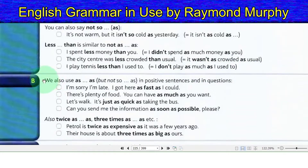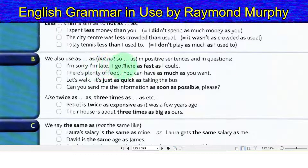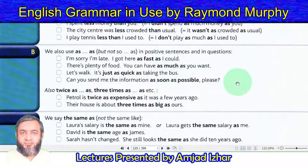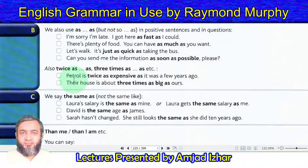We also use 'as...as' (but not 'so...as') in positive sentences and in questions. I'm sorry I'm late — I got here as fast as I could. There is plenty of food — you can have as much as you want. Let's walk — it is just as quick as taking the bus. Can you send me the information as soon as possible, please?